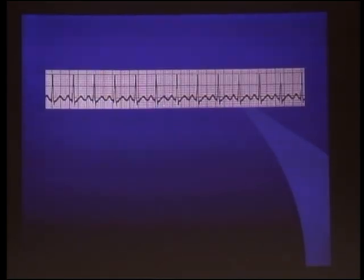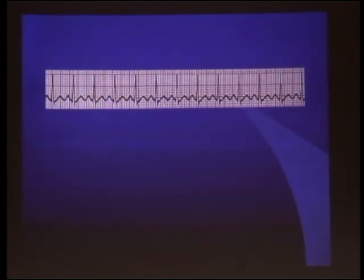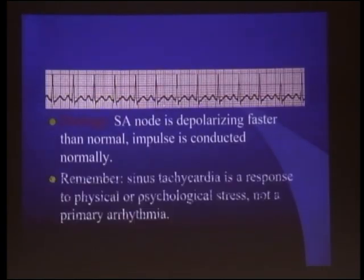Let us go through arrhythmias. Sinus tachycardia — the deviation from normal sinus rhythm is only the rate. Everything else is the same as normal sinus rhythm; only the rate is fast. So carefully look at everything: if everything matches normal sinus rhythm except the rate being fast, then this is sinus tachycardia.